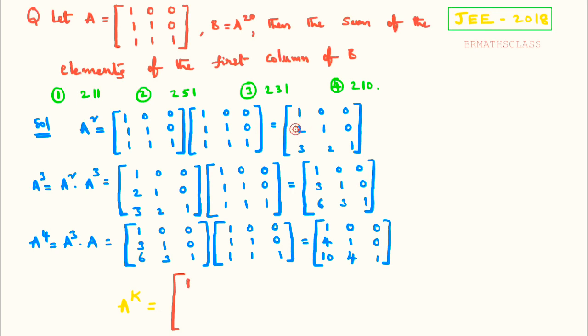For A square, 2 is there. For A cube, 3 is there. For A power 4, 4 is there. I hope you are understanding — so for A power k, this element will be k only.